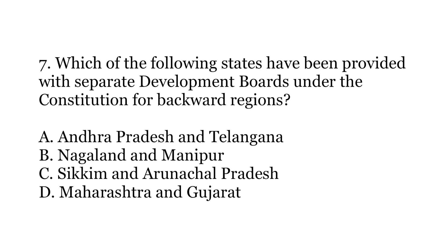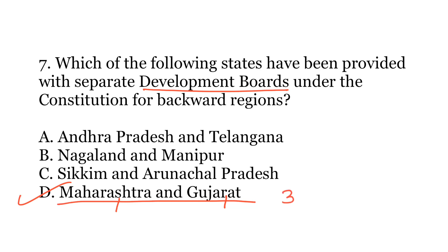Seventh question: Which of the following states have been provided with separate development boards under the Constitution for backward regions? Options: A) Andhra Pradesh and Telangana, B) Nagaland and Manipur, C) Sikkim and Arunachal Pradesh, or D) Maharashtra and Gujarat. The correct answer is D) Maharashtra and Gujarat. In Maharashtra there is Vidarbha and Marathwada, and in Gujarat there is the Kutch region — development boards for these regions are provided under Article 371 of the Constitution.